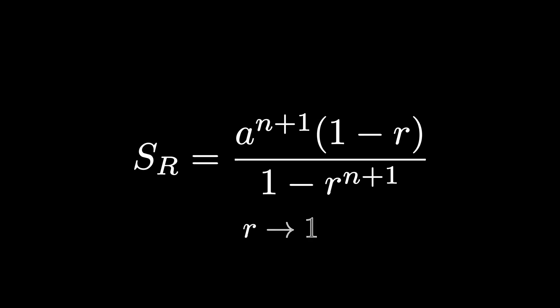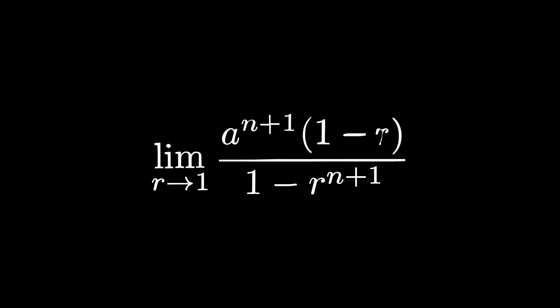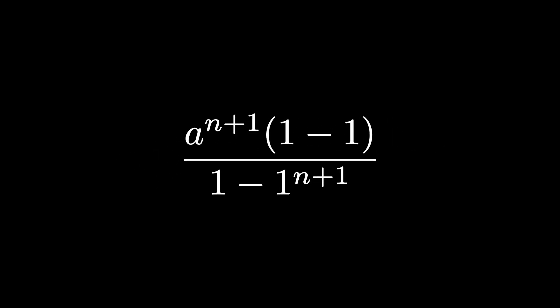The closer our r is to 1, which makes the rectangles thinner, the more accurate the infinite sum of rectangles get to the actual area under our graph. But here's the issue. When we take the limit as r goes to 1, we get a to the n plus 1 times 1 minus 1 over 1 minus 1 to the n plus 1, which just becomes an indeterminate 0 over 0.